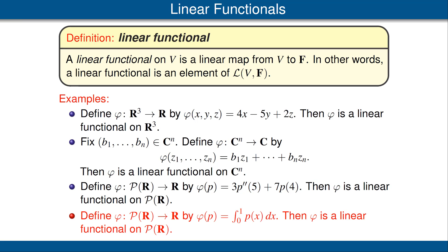For our final example, define phi on the vector space of polynomials with real coefficients by phi of p equaling the integral from 0 to 1 of p. Phi is again a linear functional on our vector space, mapping into the scalar field R.